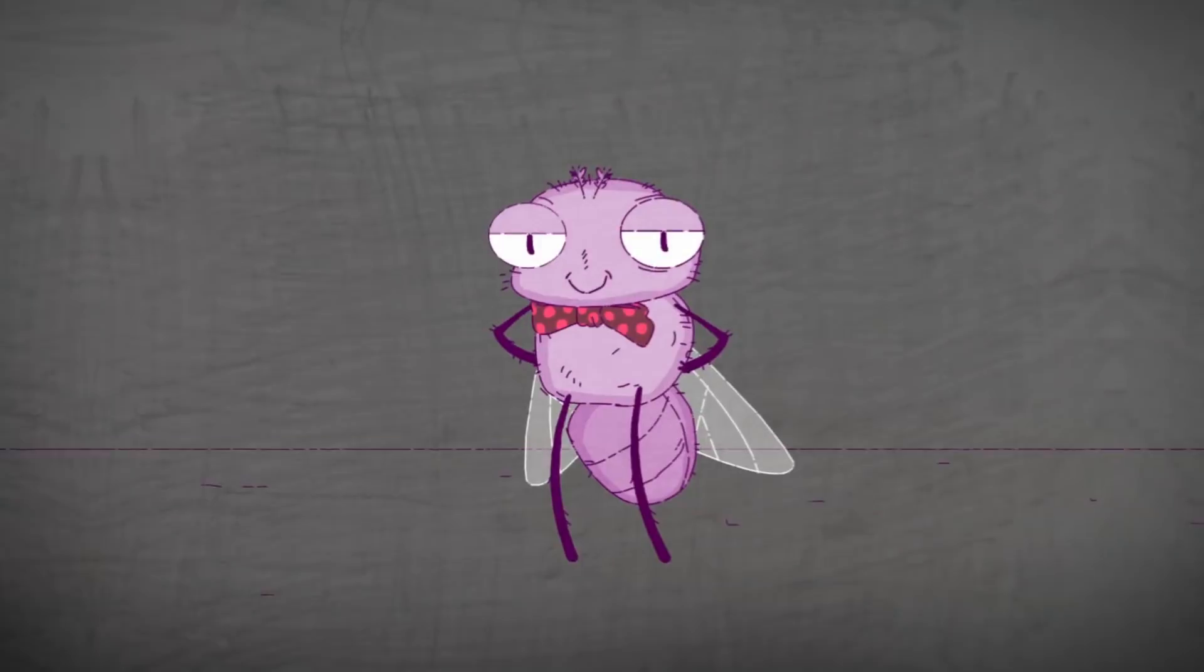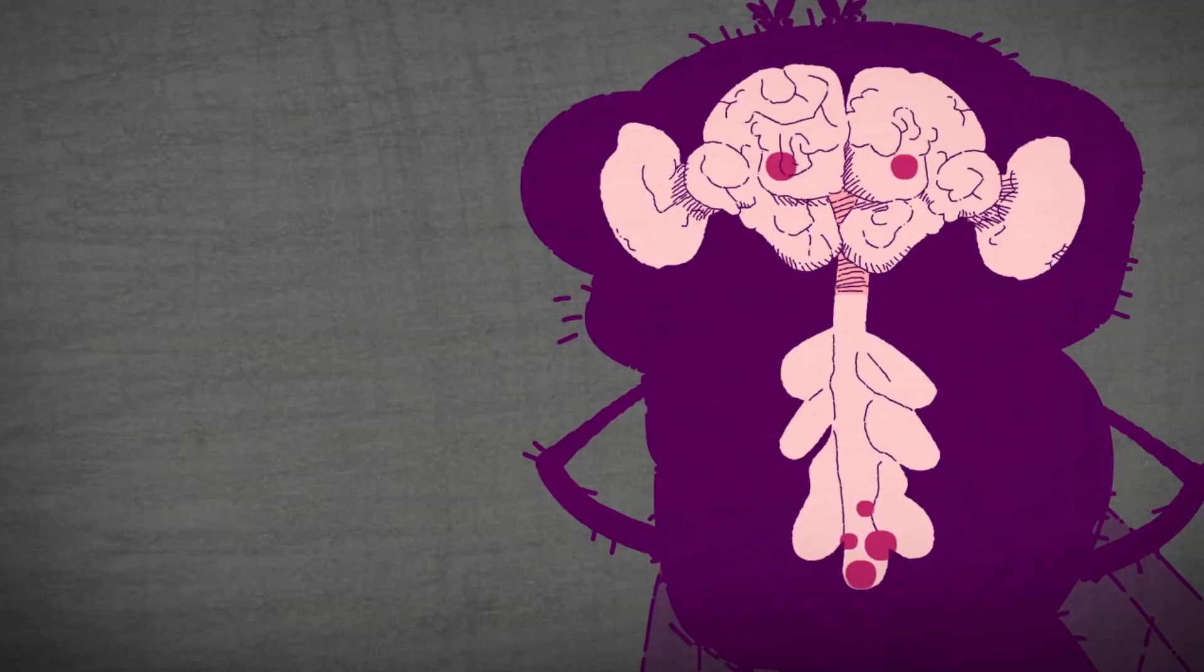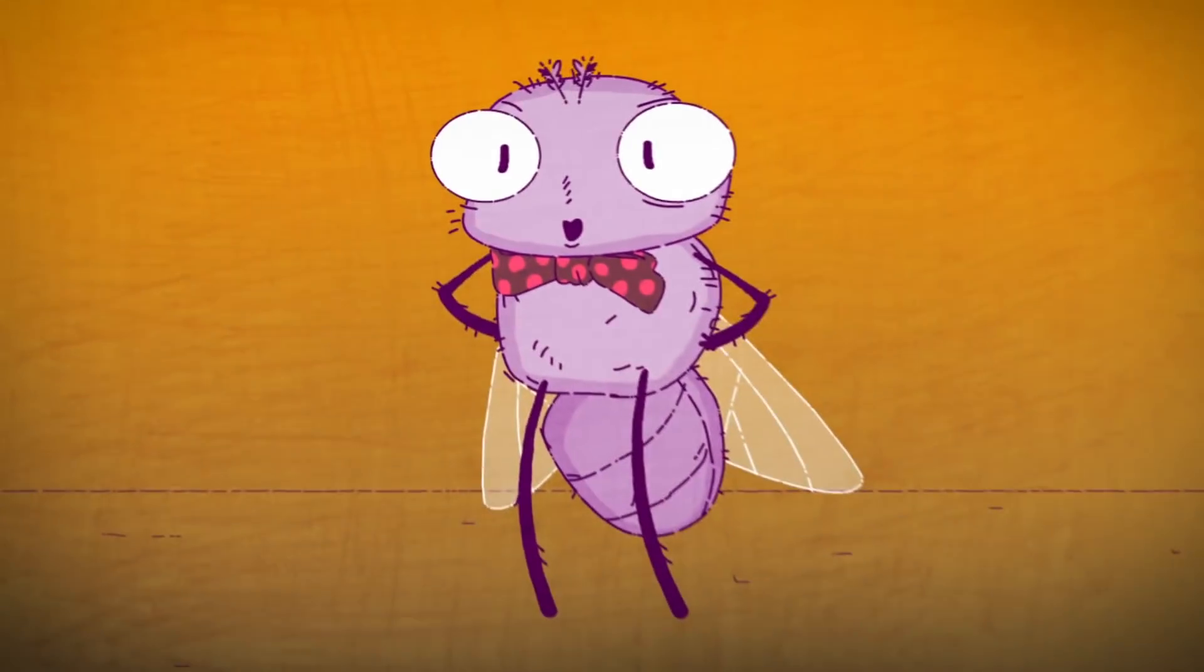To test whether ejaculation is central to mating reward, we activated neurons that express the neuropeptide corazonin and promote ejaculation.